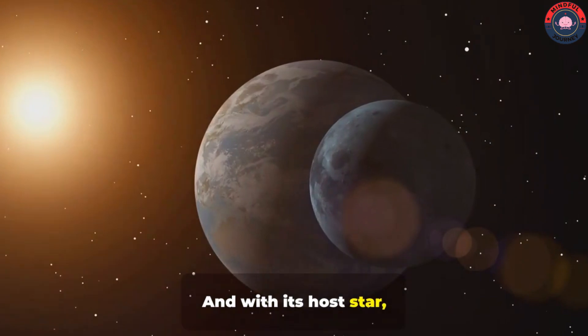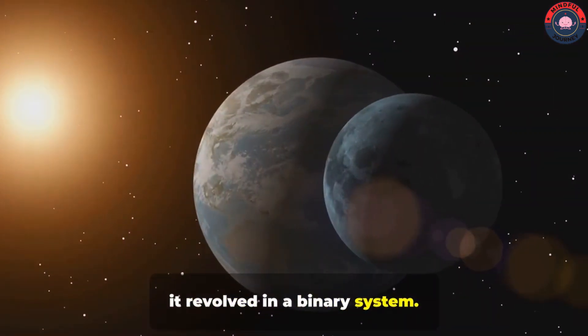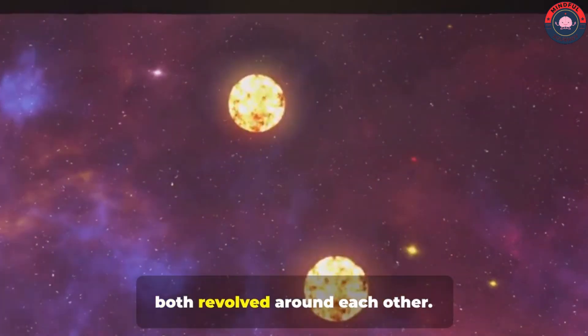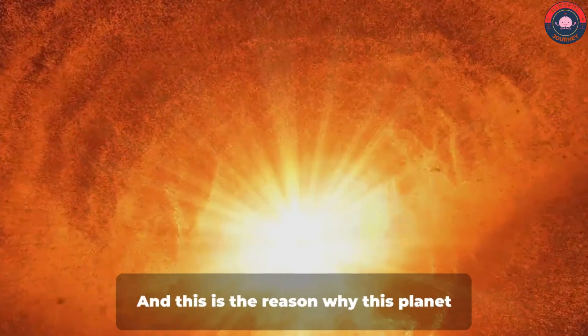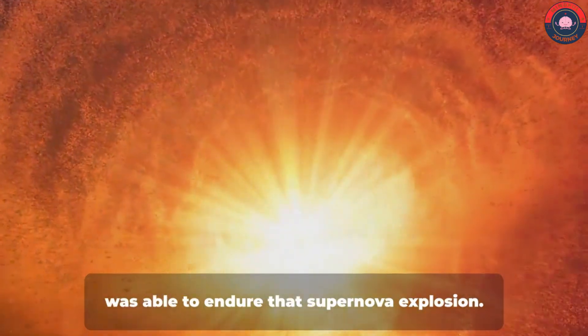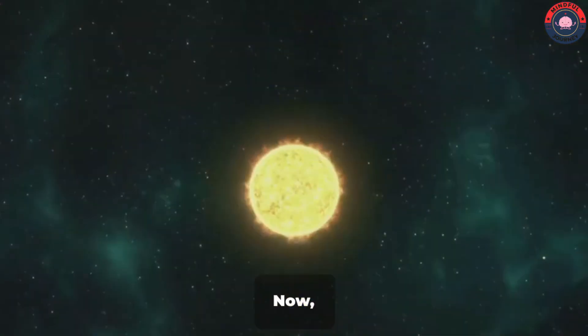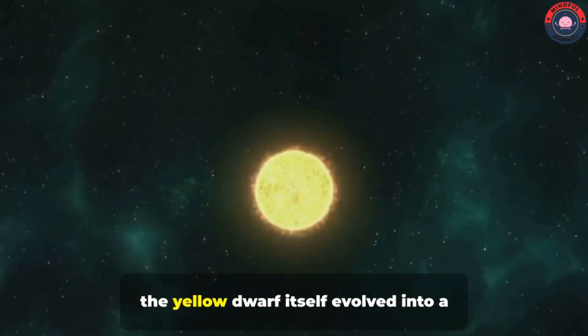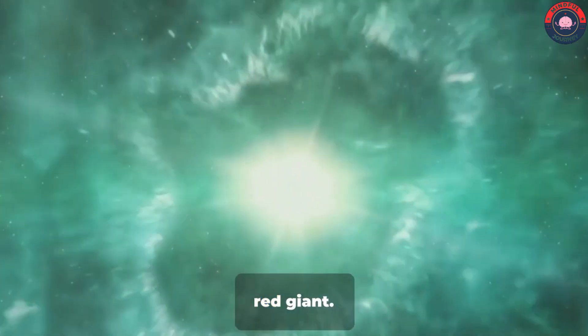And with its host star, it revolved in a binary system. That is, both revolved around each other. And this is the reason why this planet was able to endure that supernova explosion. Now, after many years, the yellow dwarf itself evolved into a red giant.